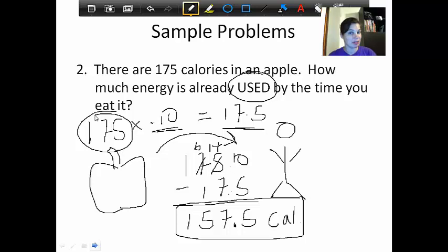You could also figure this out the other way by taking 175 times 90%, which is 0.9. That would also tell you how much was used, right? Because if 10% was passed on, then 90% was used. And that would give you this same answer. As I said, we'll go over more of these problems in class, but this gives you a little introduction anyway.